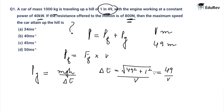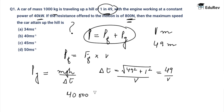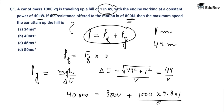Substituting these values into the power equation: 40,000 equals 800 times V plus 1000 times 9.8 times 1 upon 49, divided by V. Solving this equation, the value of V comes out to be 40 meters per second. So the answer to this question is 40 meters per second.